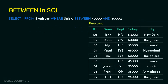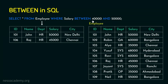Let's see an example with the employee table. The query is: SELECT * FROM employee WHERE salary BETWEEN 40000 AND 50000. Pause the video and think about the answer. The result includes all salary values between 40000 and 50000. Notice that 50000 is also included because the starting and ending values are always included.